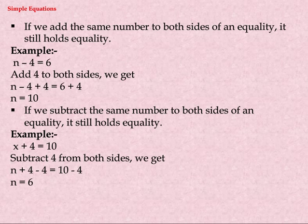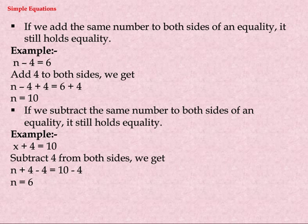If we subtract the same number from both sides of an equation, it still holds equality. Example: x plus four equals ten. Subtract four from both sides — x plus four minus four equals ten minus four — giving x equals six.